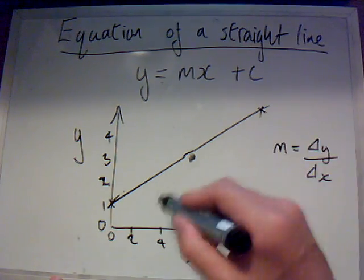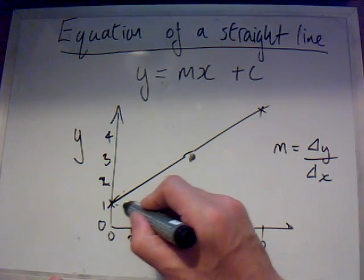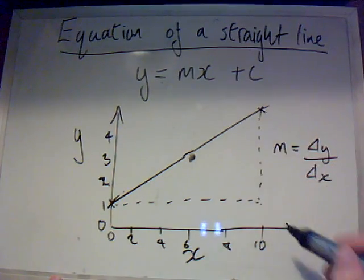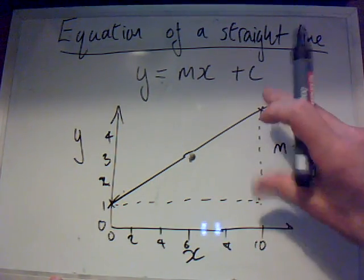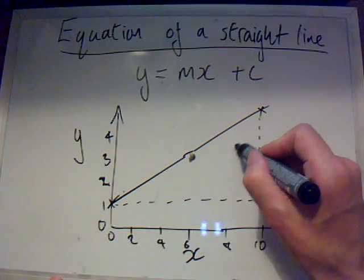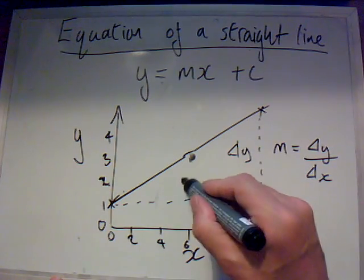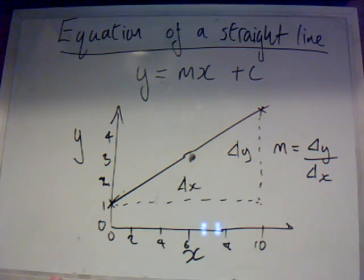Because the bigger the triangle we draw, the more accurate results, and the examiner's like it as well. So that bit there is the change in y, and that bit there, from there to there, is the change in x.